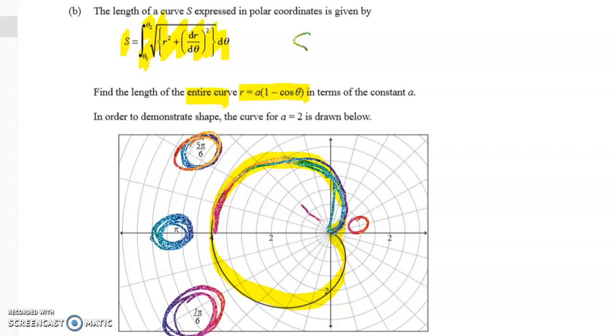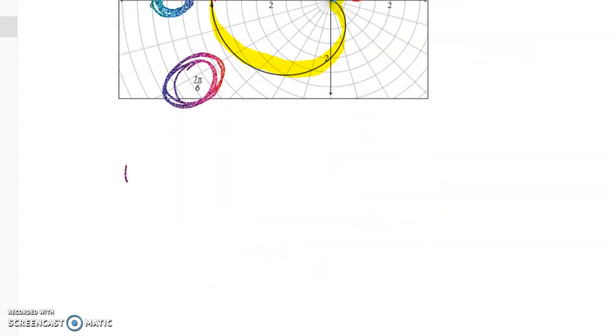So S is going to equal 2 times the integral from 0 to π of that thing there with respect to theta. The next thing that we've got to do is to figure out dr/dθ. Then we have to square this and square the derivative and start substituting. So I'll do some of that quickly now.